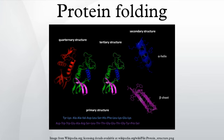Failure to fold into native structure generally produces inactive proteins, but in some instances misfolded proteins have modified or toxic functionality. Several neurodegenerative and other diseases are believed to result from the accumulation of amyloid fibrils formed by misfolded proteins. Many allergies are caused by incorrect folding of some proteins, because the immune system does not produce antibodies for certain protein structures.